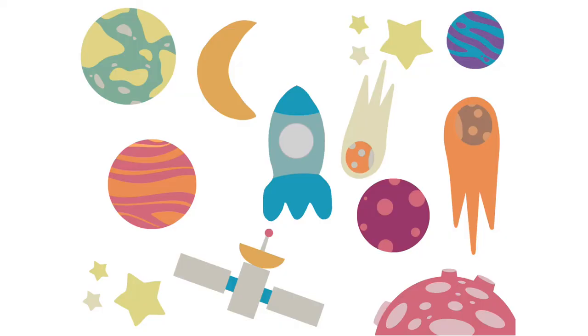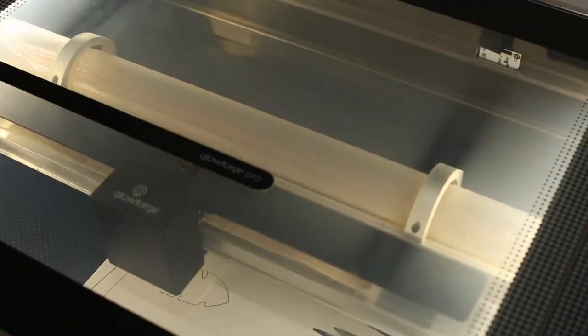We did it all digitally. Same with space - we knew that they had a rocket ship and star and moon cookie cutters so we knew we were gonna use those and then all the other elements we kind of digitally mocked up.